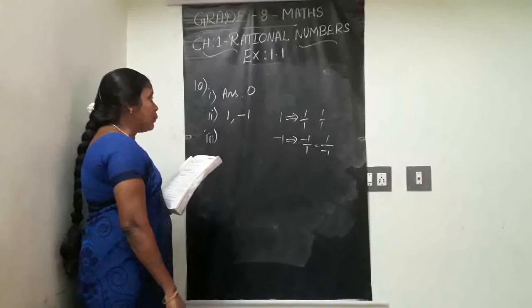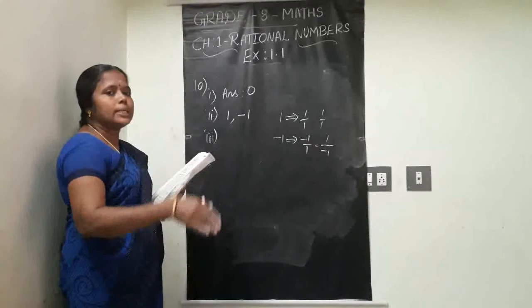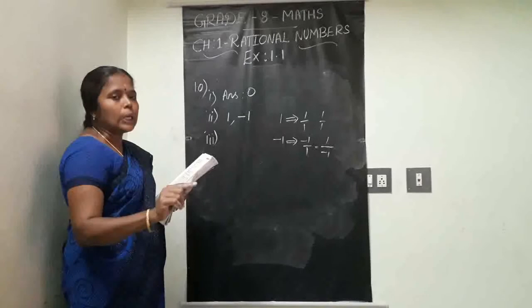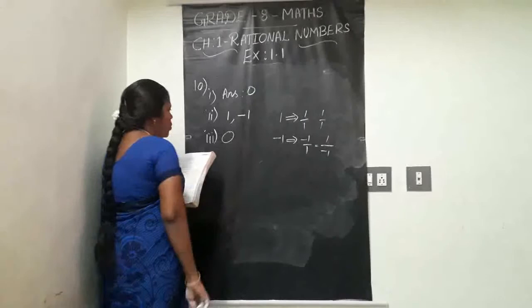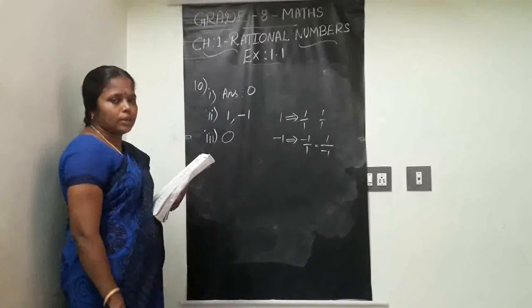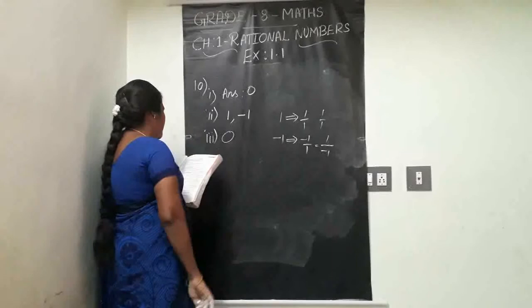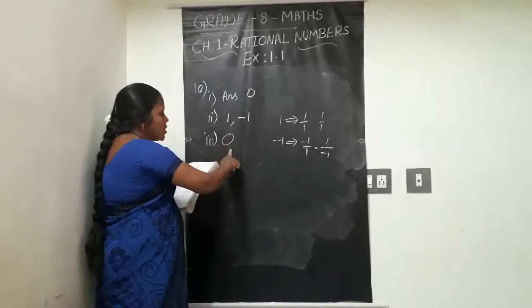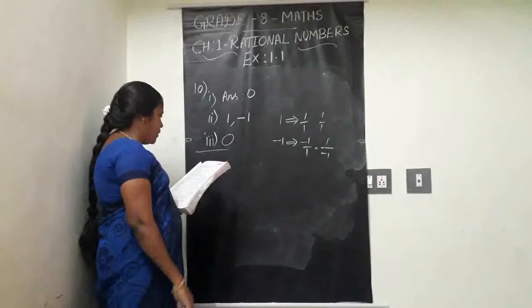Third part of Q10: the rational number that is equal to its negative — that means equal to its additive inverse. The answer is zero. Zero has no sign, so plus zero and minus zero are the same. Zero is the only rational number equal to its own negative.